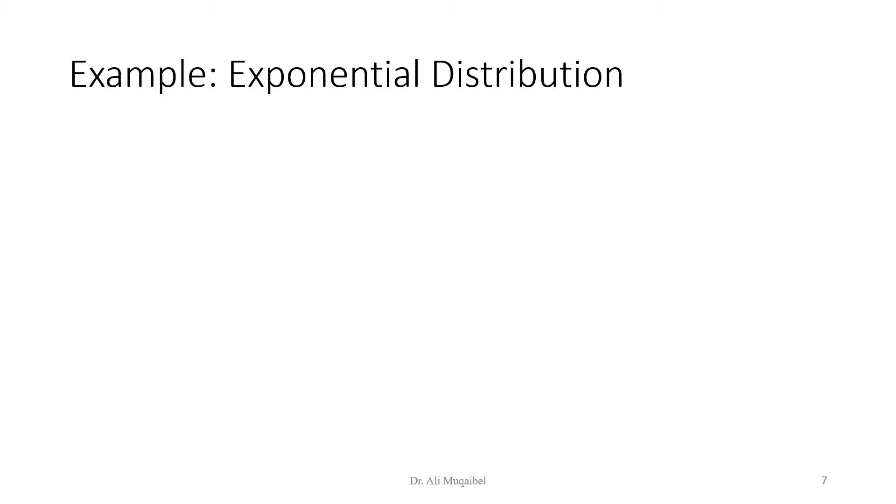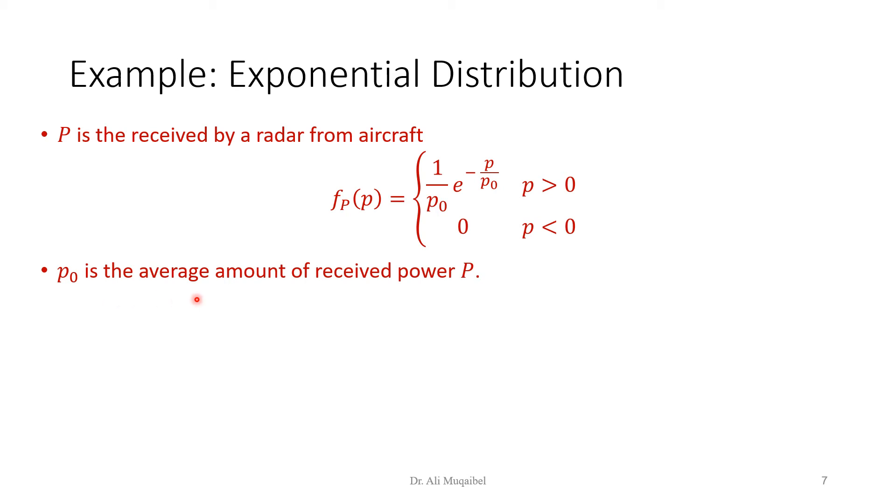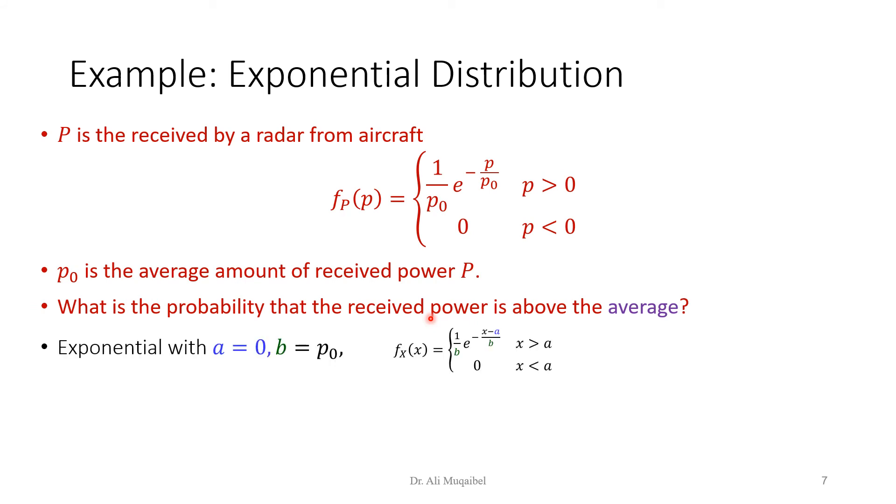Now we are having an example for the exponential distribution, a practical example. P is the received power by a radar from an aircraft. We have a radar system which receives reflection from aircraft, and we're told that the probability density function follows the following distribution. P0 is the average amount of received power. This is very much similar to the exponential. If I compare it with the exponential, I will find out the following. B is P0, and A is equal to 0 here. So this is exponential.